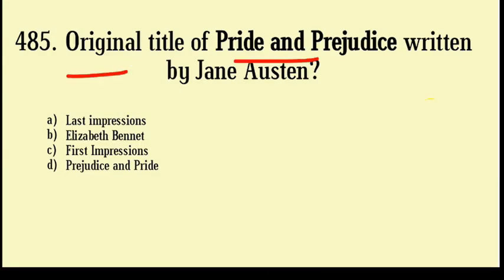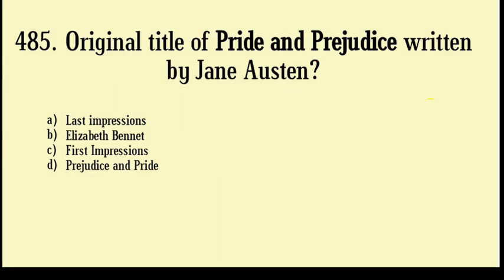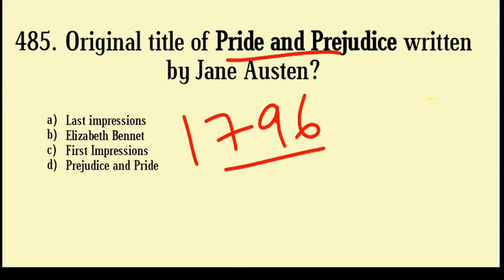What was the original title of Pride and Prejudice written by Jane Austen? Last Impressions, Elizabeth Bennet, First Impressions, Prejudice and Pride. Correct answer: Option number C, First Impressions. The novel Pride and Prejudice was probably written in 1796 and originally titled First Impressions. Jane Austen's Pride and Prejudice is said to be a historical and social critique on social status and the expectations of women during the 18th century.